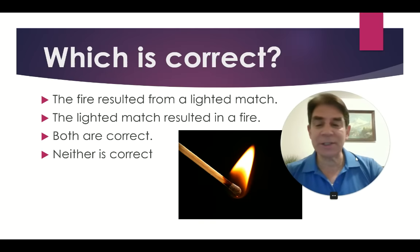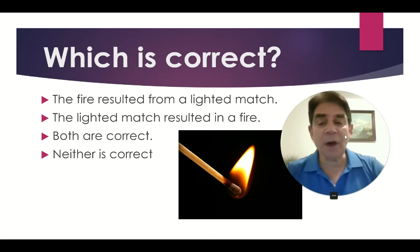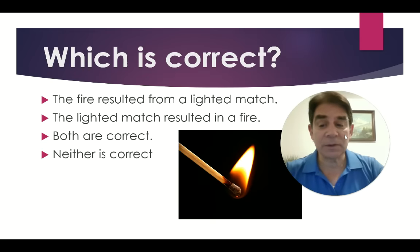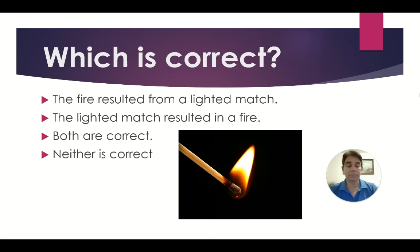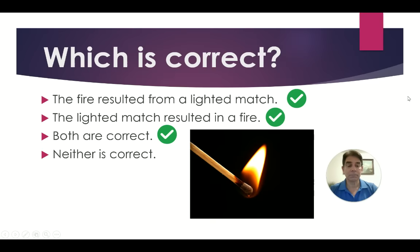Which of the following sentences is correct? The fire resulted from a lighted match. The lighted match resulted in a fire. Both are correct. Neither is correct. The best answer is C — both are correct. The fire resulted from a lighted match. The lighted match resulted in a fire.